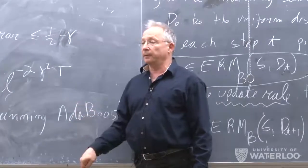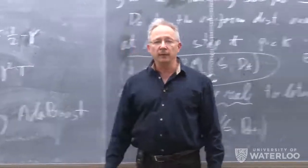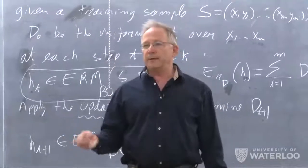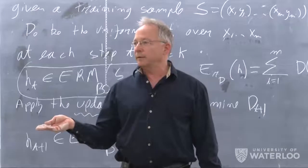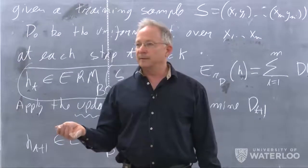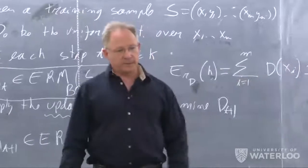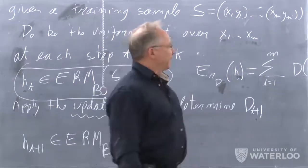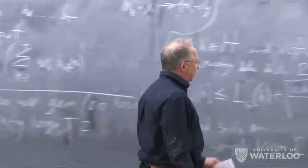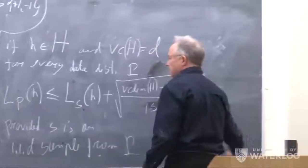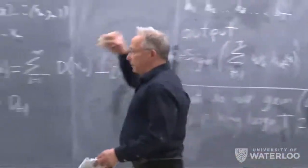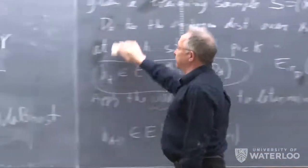In many cases we can get to zero error on the sample. But did we achieve a miracle and get zero error on every distribution? No — the other term is still missing. We also need to analyze the VC dimension, because that controls the generalization gap between empirical and true error.